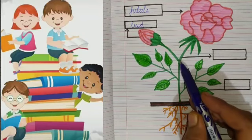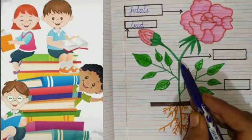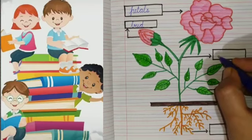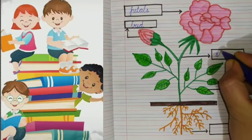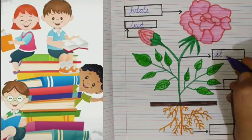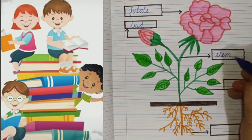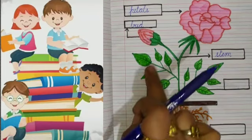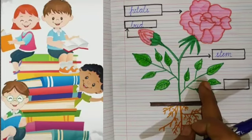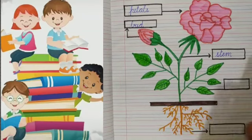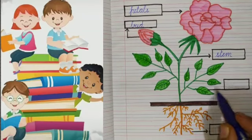Which part is this? This is a stem. This is a very important part of a plant. Write down in beautiful handwriting: S-T-E-M, stem. What are these? These are leaves. See, we have to write...